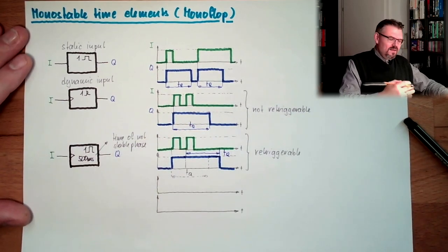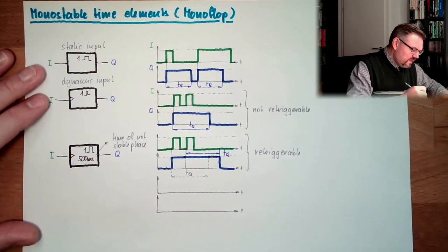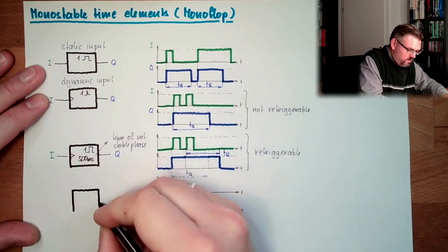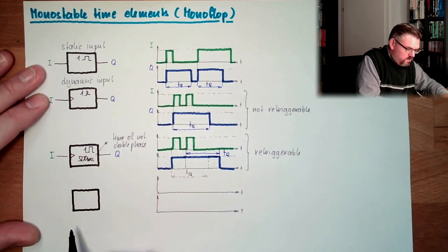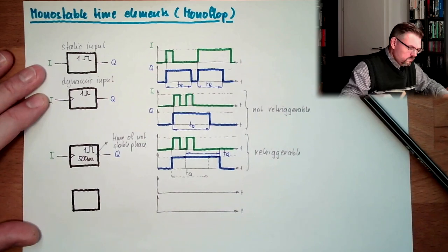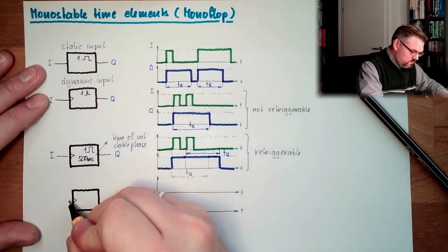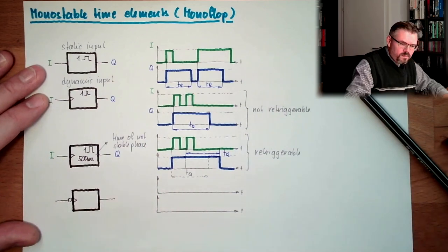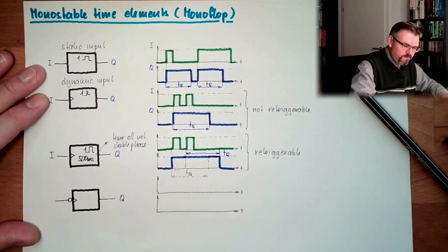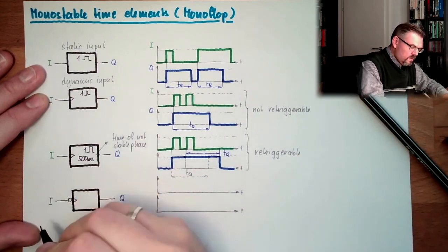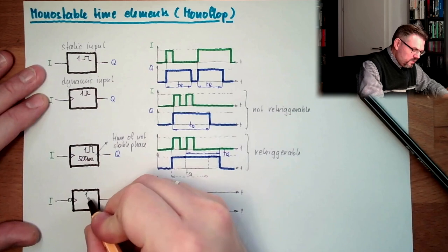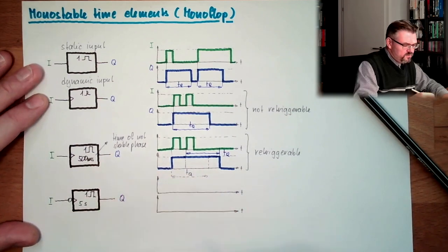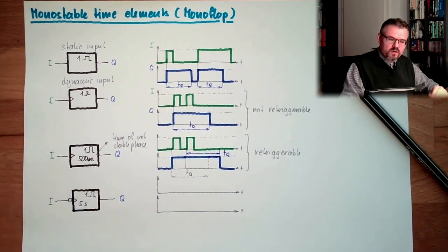And of course, it's not only this. We can also have different elements. However, here the falling edge is triggering.